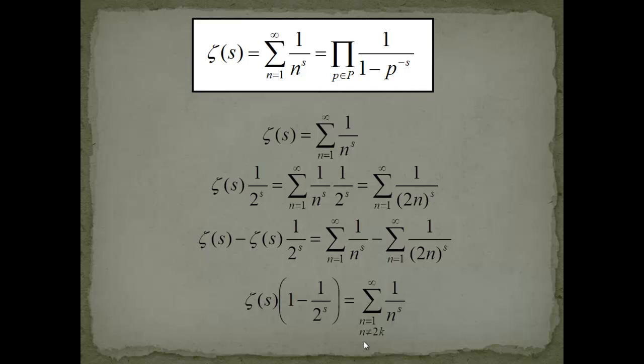So it somehow smells like we are getting closer to the Euler product representation. Now on the right hand side I use a new kind of notation. I say I take the sum from 1 to infinity but with a condition that the numbers n are not odd numbers because we subtracted them.